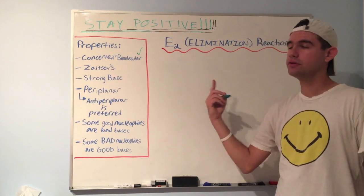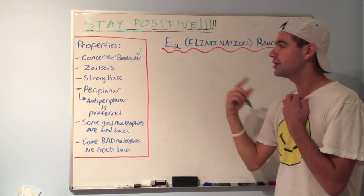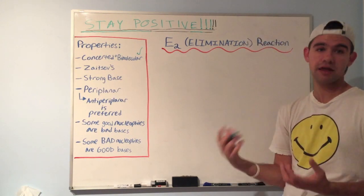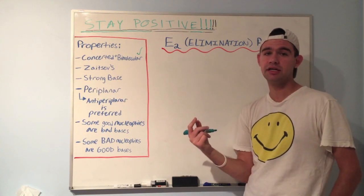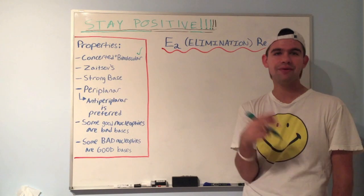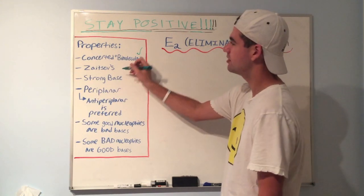Zaitsev's rule applies to E2 just like it does for E1. I talked about it a lot in the E1 video, but just a quick review. Zaitsev's rule says that the most substituted alkene is favored. So monosubstituted is less favorable than a disubstituted, which is less favorable than a tri, which is less favorable than a tetrasubstituted alkene. So that's Zaitsev's rule.